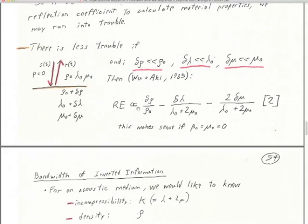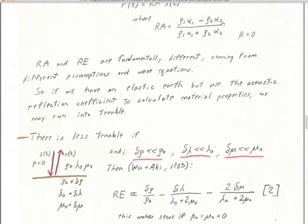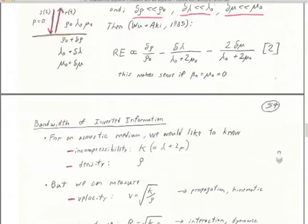Notice that here is an elastic reflection coefficient approximated as basically delta rho over rho0 minus delta lambda over (lambda0 plus 2mu0), minus 2 delta mu over (lambda0 plus 2mu0). This still works — if we're in water and mu0 and beta0 are both zero, this equation still works. We can still get a reflection coefficient in acoustic media, and as shear velocity drops the reflection coefficient doesn't go crazy. This asymptotic approach of Wu and Aki works very well, and that's really one reason why the modeling approach works well too.